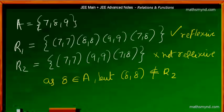In the second relation R2, you can see that (8,8) is not present. Now 8 is an element of the set A, but the ordered pair of 8 with itself is not present in the relation, so R2 is not reflexive.